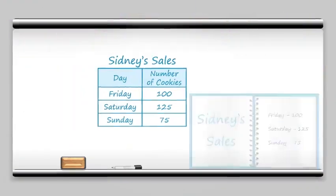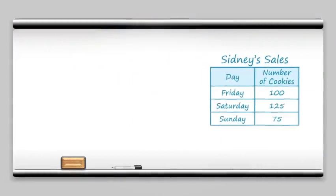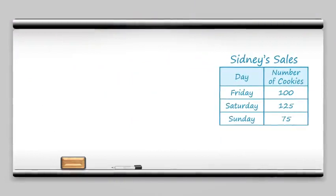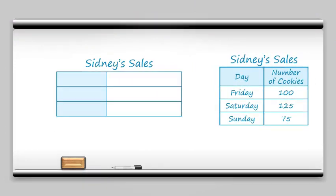Now we can take this mathy-looking table and turn it into a picture graph. A picture graph is going to have a title just like our table. We're going to have the categories down the side, and then we're going to fill up the frequency — the number of cookies — with pictures instead of a number. So what kind of picture should we use? How about a cookie? That would make sense, right?